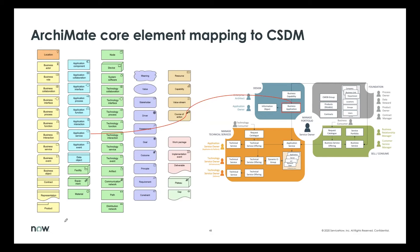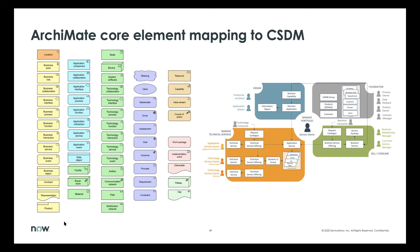The application service largely maps to business applications. Application services can be hierarchical, so you can support an application service hierarchy by layering application services in the Archimate model, though this gets a bit confusing given the different connotations. The data object maps pretty well. Facility largely maps to the use of location hierarchies in CSDM — that's a pretty good mapping. Equipment maps largely to the CMDB CIs, where physical infrastructure comes in. Nodes also overlaps there — we don't make a big distinction in the CMDB between nodes, devices, and equipment, so all of that falls in that area.